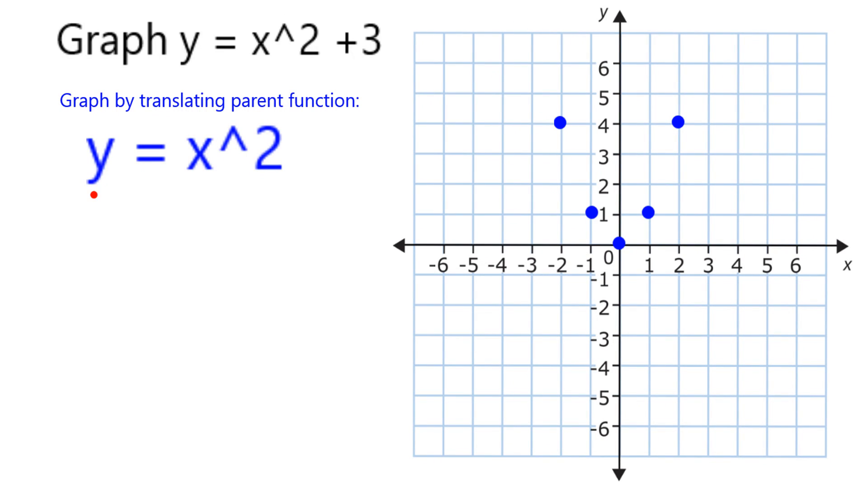The parent quadratic function y equals x squared goes through the points that are highlighted on the graph over here. If it's not clear why, it comes from the xy table here.